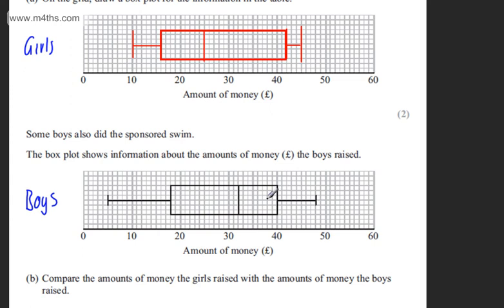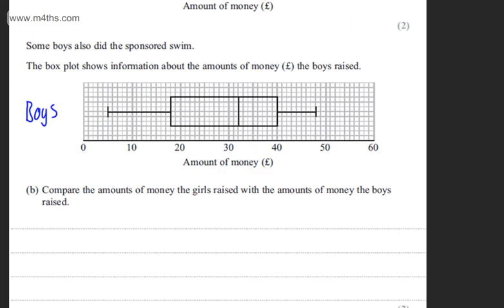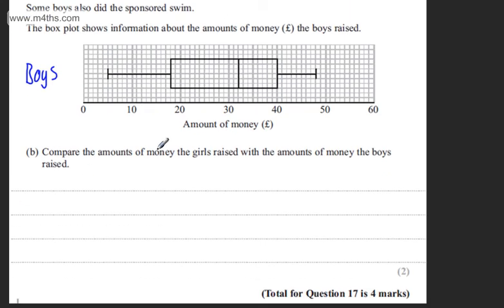So there are some examples. You can make reference to the median in context and state that the average amount of money raised by the girls was less. We can look at the total range and the interquartile range. We're just asked to make comparisons. For two marks, you would be expected to do at least two statements.